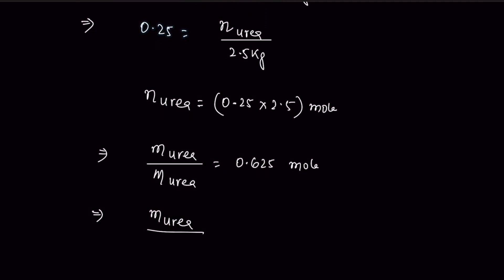For the molar mass of urea is equal to 60. How to find the molar mass? Molar mass is equal to—here the urea is NH2CONH2.